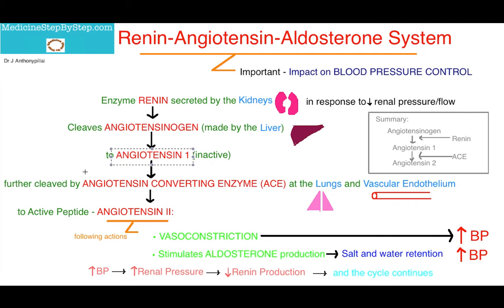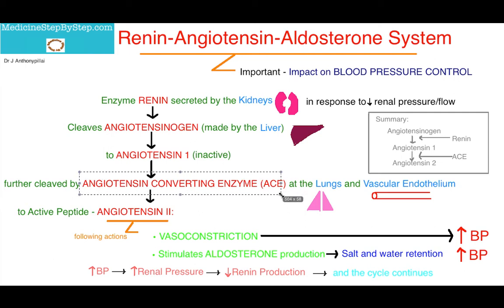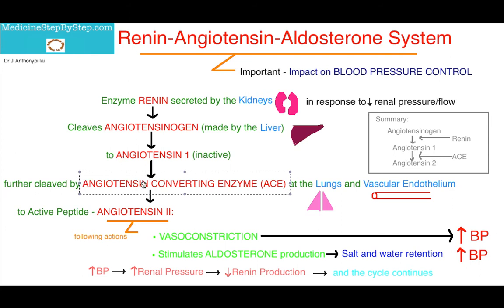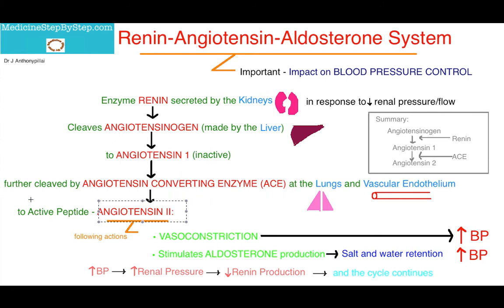So then angiotensin-converting enzyme, also known as ACE, which can be found at the lungs and vascular endothelium — which is the inner lining of cells of blood vessels — then converts angiotensin-1 to angiotensin-2, which is active.